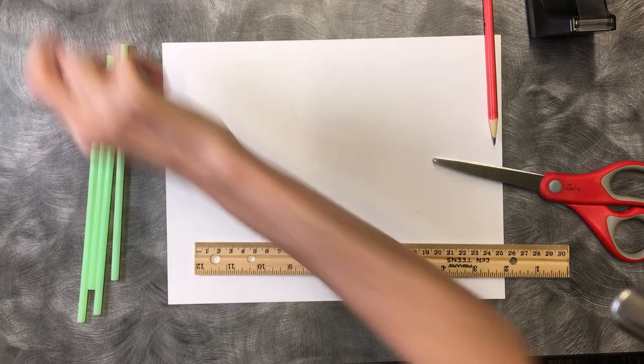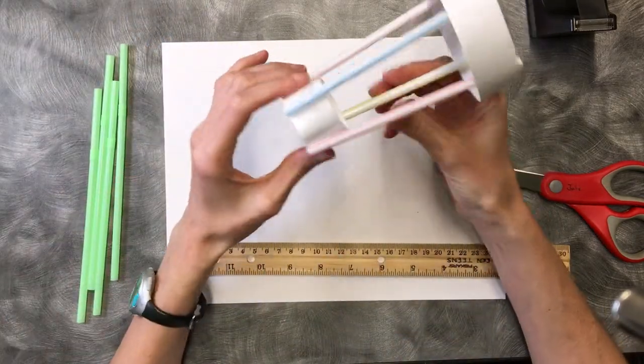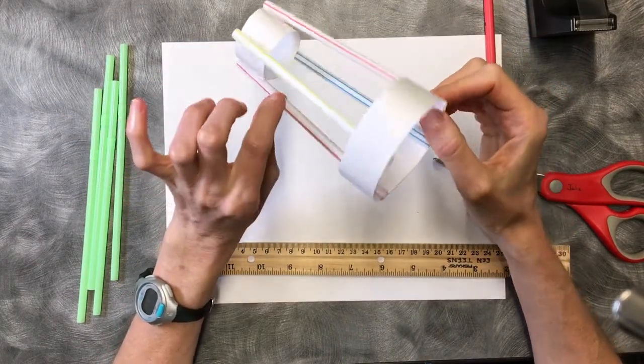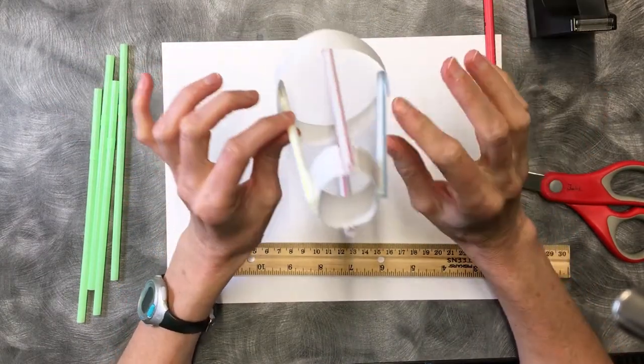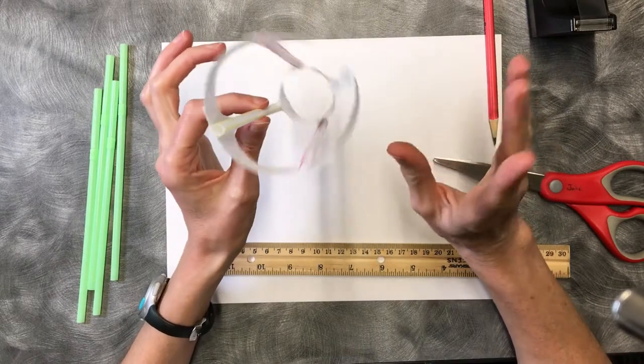So if you're wondering what a straw flyer is, it is this. It is made with cardstock and some straws and it's kind of like a paper airplane but a little fancier with the straws.